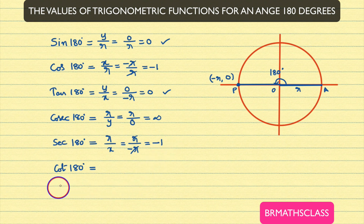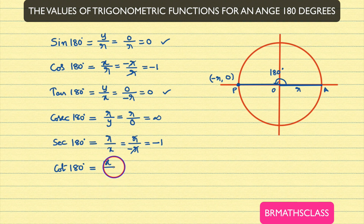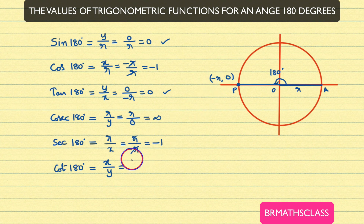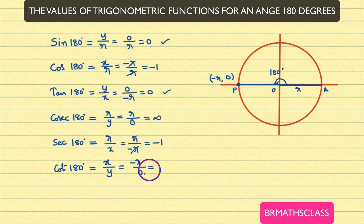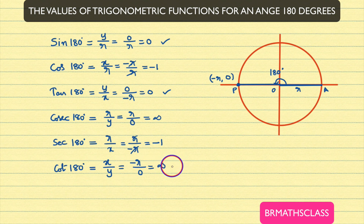Now, we will see what is the value of cot 180 degrees. From the definitions of trigonometric functions, cot theta is defined as x divided by y. X means the x coordinate of this point, which is minus r. Y means the y coordinate of this point, which is 0. As the denominator is 0, this ratio is not defined. Therefore, cot 180 degrees value is not defined.